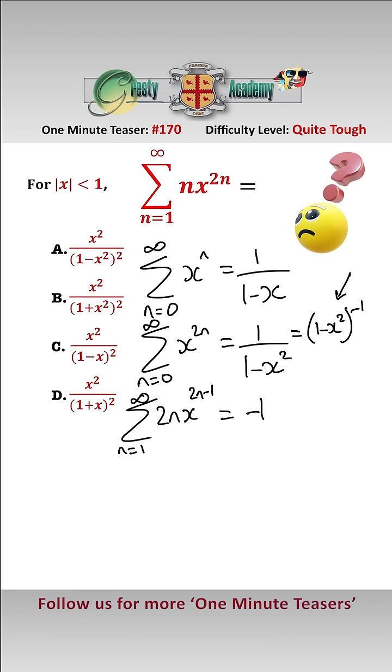and we differentiate this, that gives us minus 1 over 1 minus x squared squared times the differential inside the bracket minus 2x, which equals 2x over 1 minus x squared squared. Now all we have to do is multiply by x over 2 both sides,